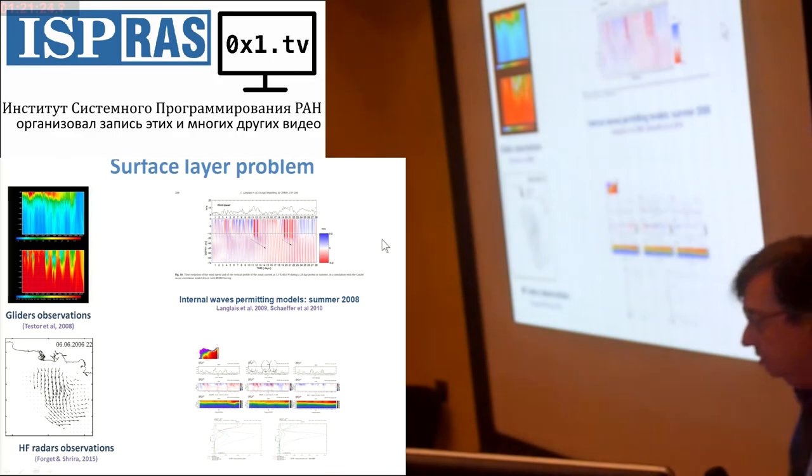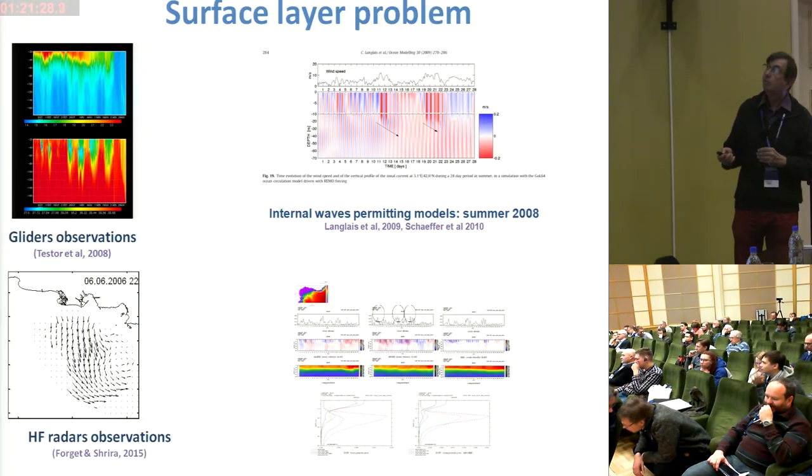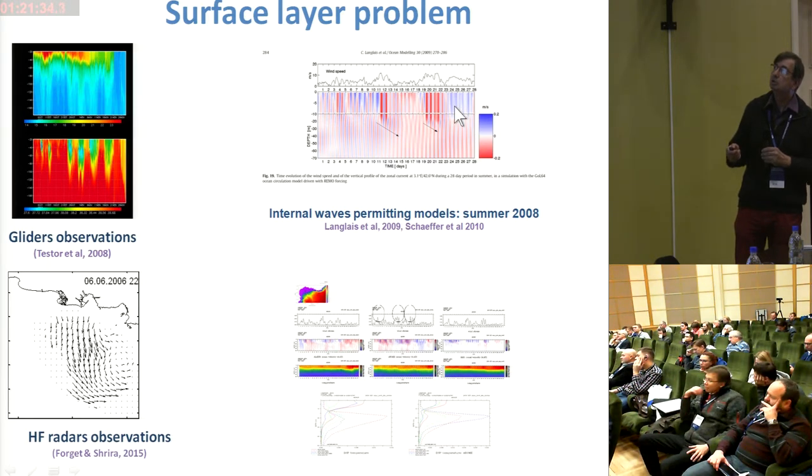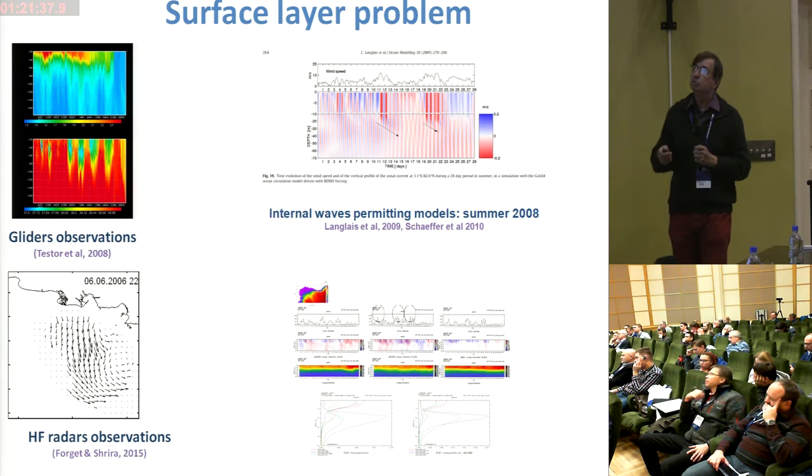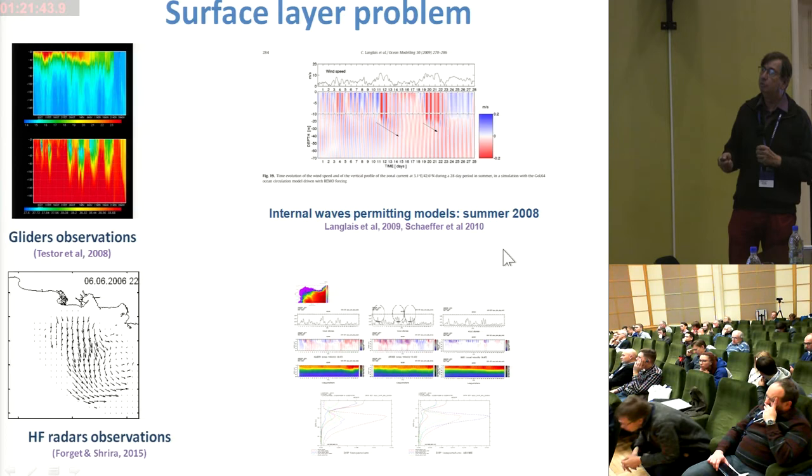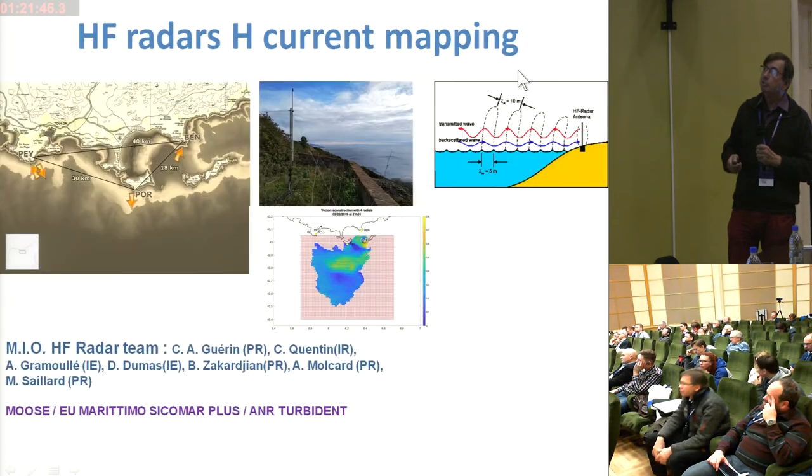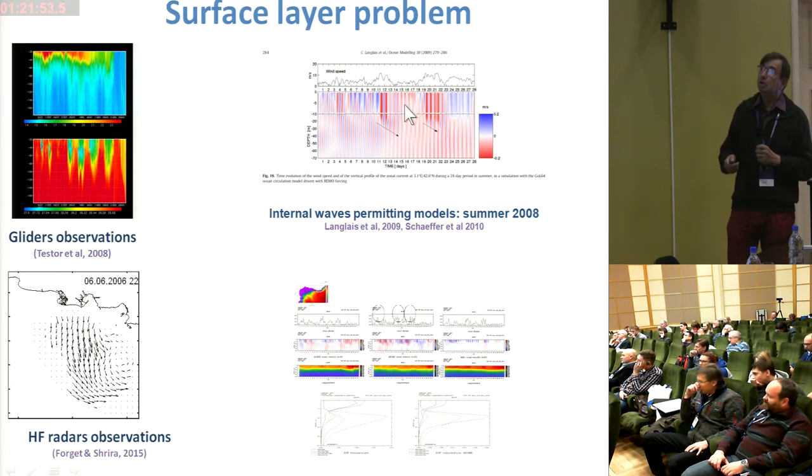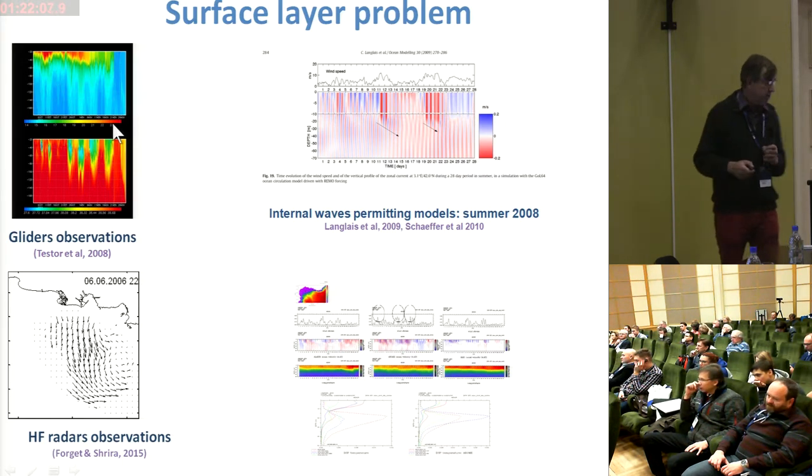So the point is that if you consider high resolution model, I say one kilometer in horizontal and one meter in vertical, which is now very possible in coastal flows and even in larger basins. This is an example from NEMO model. Then it's possible to observe artificial internal waves. As you can see here, for example, the signal of temperature, which is absolutely different from what is observed from gliders, for example, on the left side, from temperature and salinity.